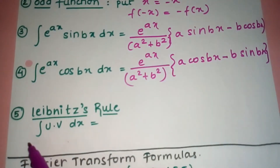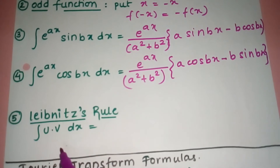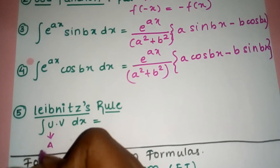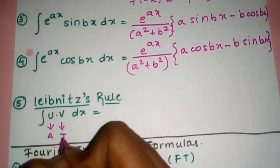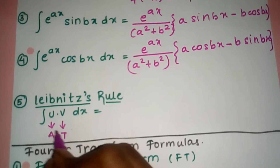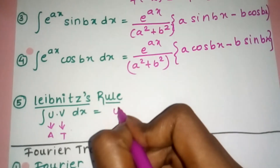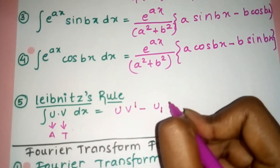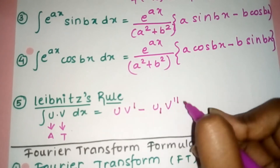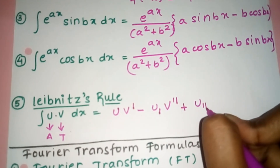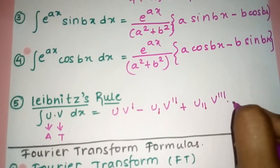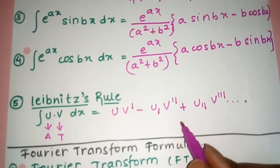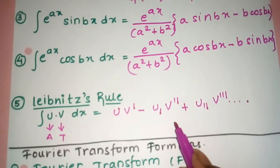Then we have the LIATE rule — a kind of u·v rule for integration. Here u should be Algebraic and v should be Trigonometric. The formula is: u·∫v dx minus u'·∫∫v dx plus u''·∫∫∫v dx, and so on. I will explain this rule as the problems come, so for now pause the video, write down the formulas, and learn them.